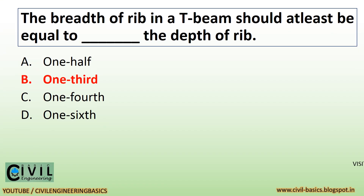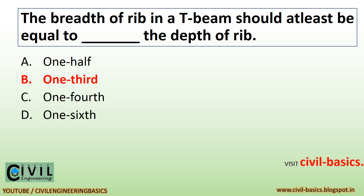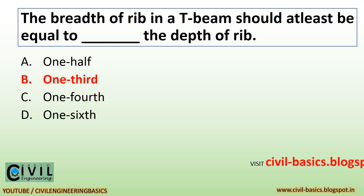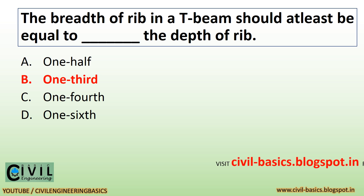The breadth of rib in a T-beam should at least be equal to one-third the depth of rib.